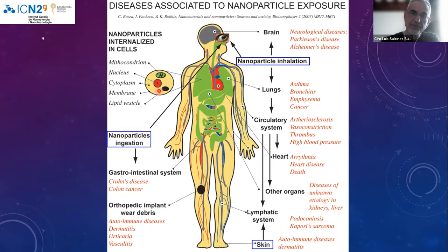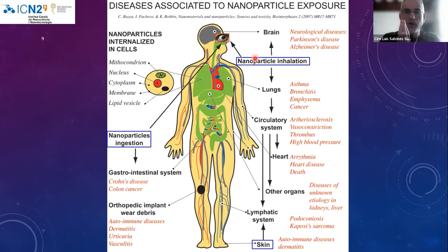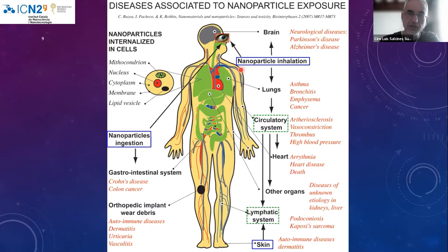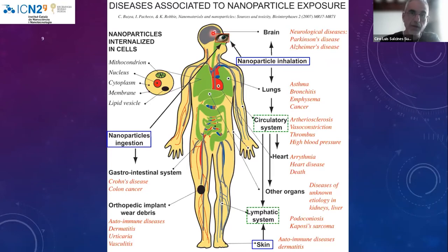One particularly important behavior specific to nanomaterials is translocation. This means that they cross physical barriers and can deposit in different places of our organism, using the circulatory and lymphatic systems. One of the first discoveries was that through the respiratory tract and head airways, nanoparticles were able to travel directly to the brain. This is very well established and is one of the key particularities of nanomaterials that we must know.